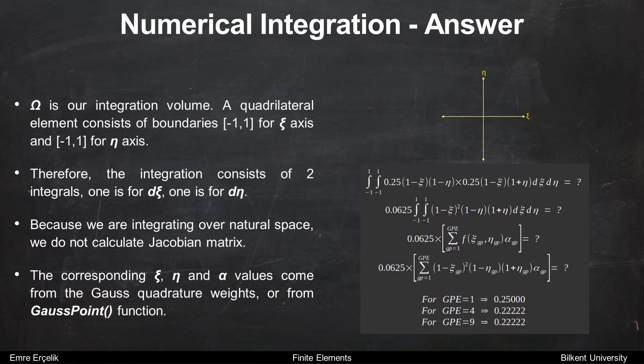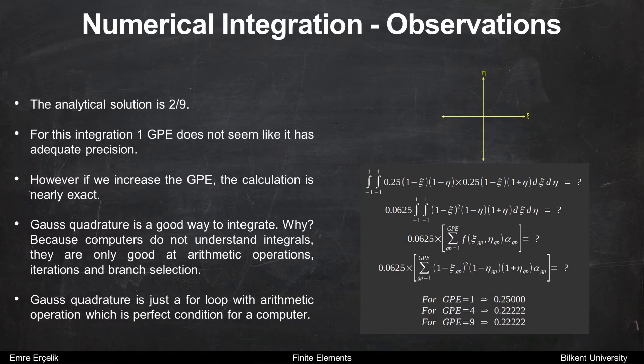A quadrilateral element consists of boundaries minus one to one for the xi axis and minus one to one for the eta axis. Therefore, the integration consists of two integrals — one for xi and one for eta. Because we are integrating over natural space, we do not calculate the Jacobian matrix. The corresponding eta, xi, and alpha values come from the Gauss quadrature weights or Gauss point function. If you calculate the analytical solution, it's 2 divided by 9.